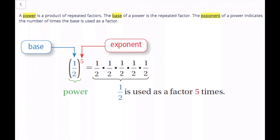We're going to talk about exponents right now. A power, which is the same thing as an exponent, is a product of repeated factors, so repeated multiplication. The base of a power is the repeated factor, the number that's being multiplied multiple times, and then the exponent of the power indicates the number of times that the base is used as a factor, so how many of those numbers are being multiplied.